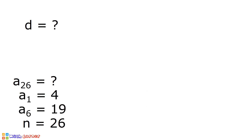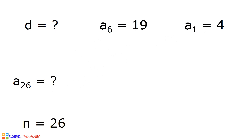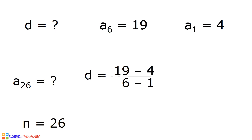There is another way to solve for the common difference — a shorter way. We use the two non-consecutive terms of the arithmetic sequence. To solve for the common difference, we subtract the sixth term minus the first term, then divide by 6 minus 1. Because 19 is the sixth term and 4 is the first term: 19 minus 4 is equal to 15, divided by 6 minus 1 which is 5, so 15 divided by 5 is equal to 3. The common difference is equal to 3.